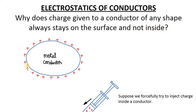We have a metal conductor here of any shape. If you provide it with any amount of charge, let's say positive charge, it will always stay on the outer surface of the metal conductor.